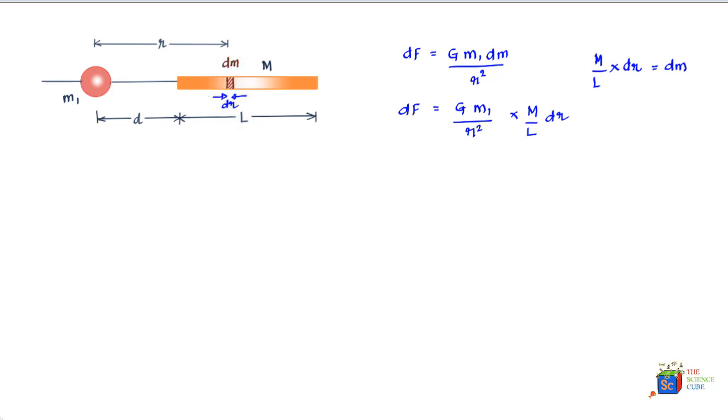Now if you want to find what is the force impressed by this entire rod, all we need to do is integrate both sides. And if you integrate both sides, what you'll get is on the left hand side would be F, and this would equal the integral of G*m1*M/L times 1/r² dr.